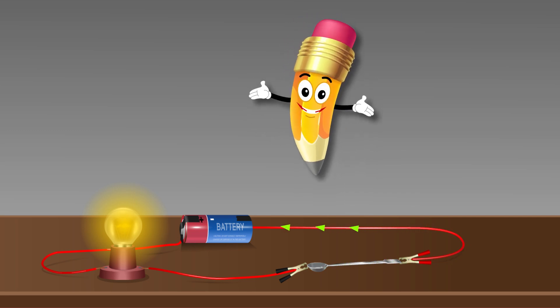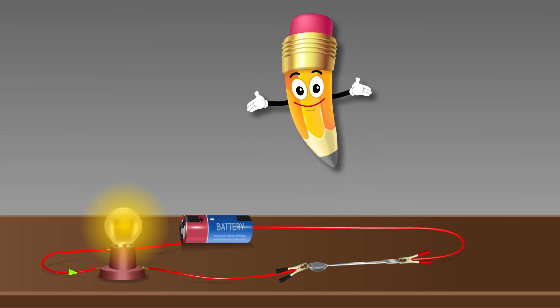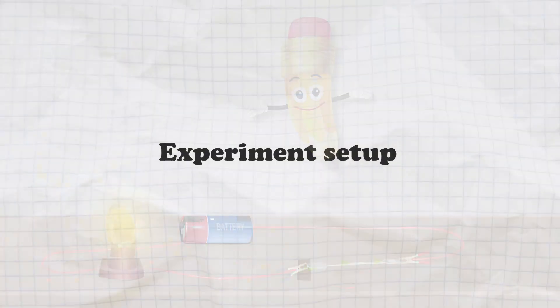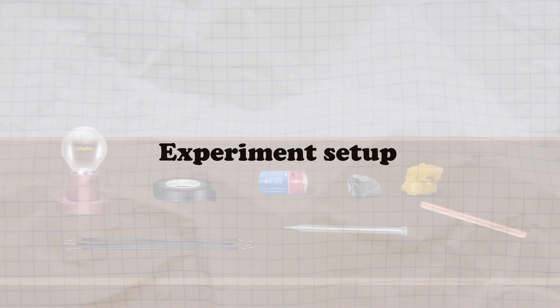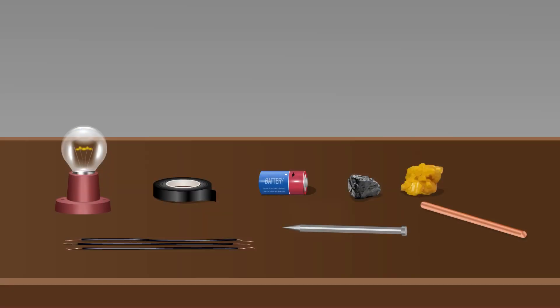Let's explore conductors and insulators. For this experiment, we will need the following materials: an electric cell, a bulb, copper wire, and insulation tape.